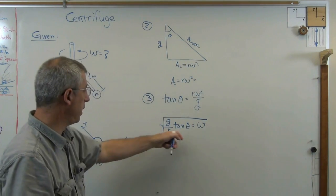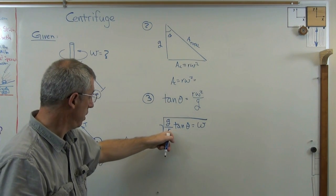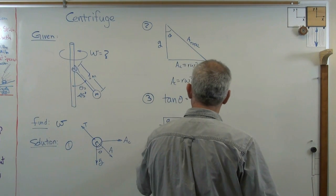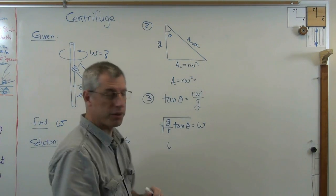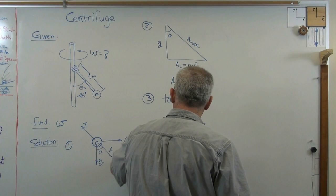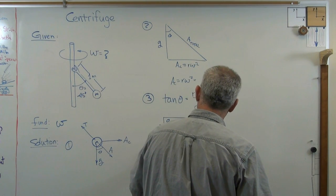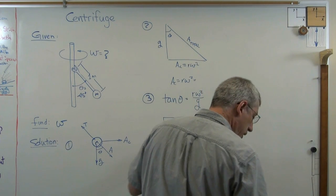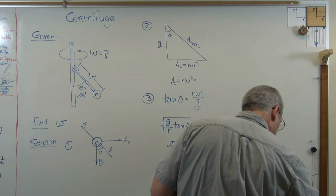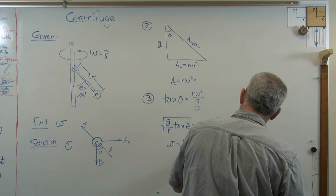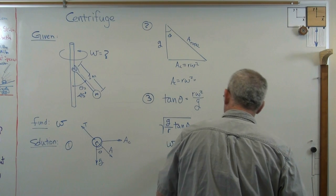Well, this is kind of nice because at 45 degrees tangent theta is 1 and r is 1. So omega equals the square root of 9.81. And that turns out to be 3.132 radians per second.